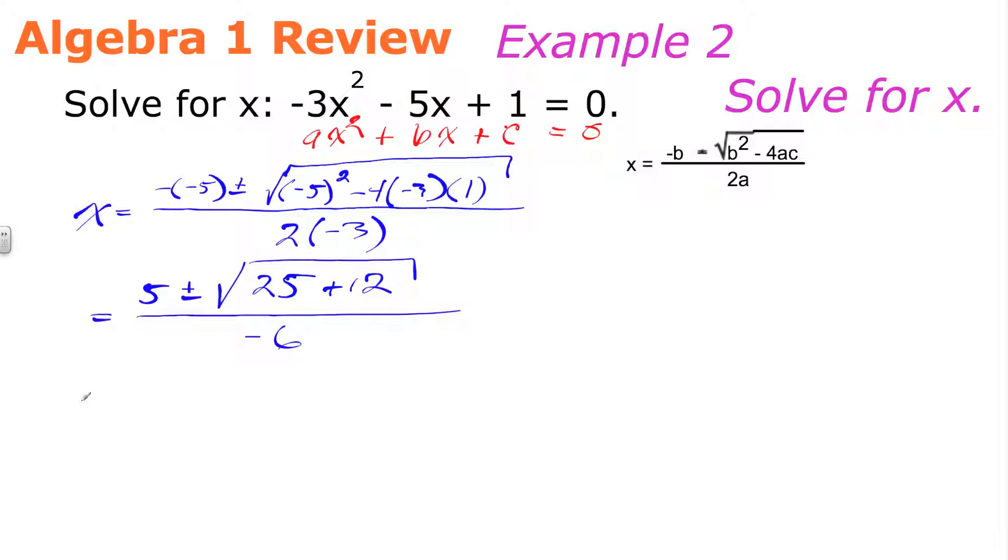And in the denominator, 2 × -3 is -6. Now, we're going to add these together. And here's what the real difference comes in. Is that here now, instead of having a perfect square number like we had in the last problem, 64, when we add these together, we get 37. So, we can't take that square root without a calculator. It'd be good to note that this is a perfectly acceptable answer: 5 ± √37 over -6.